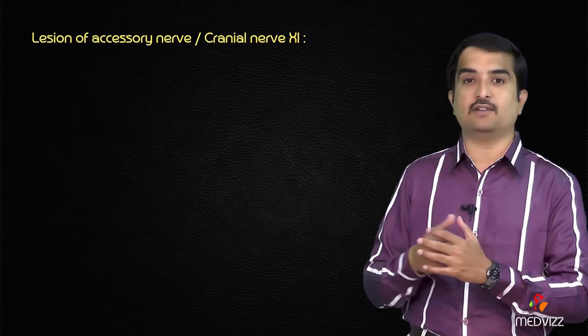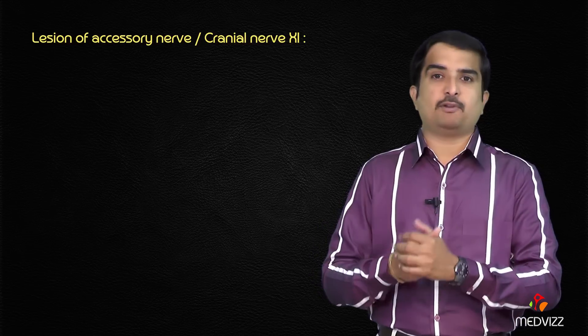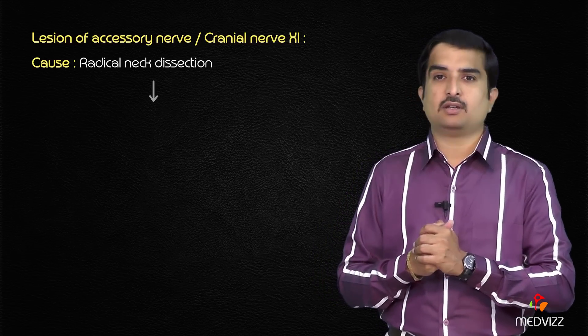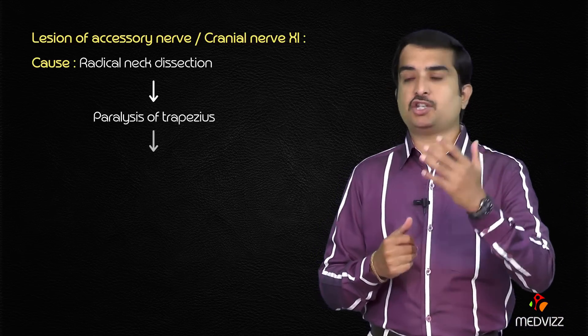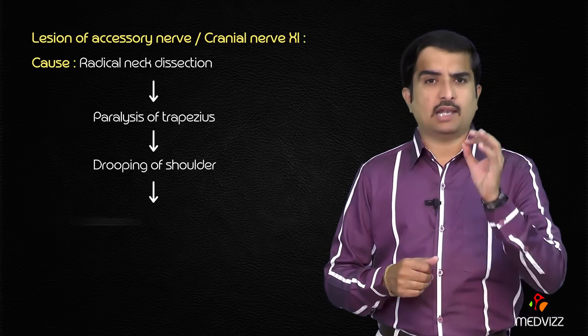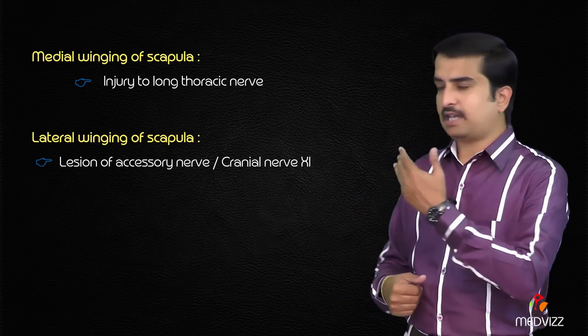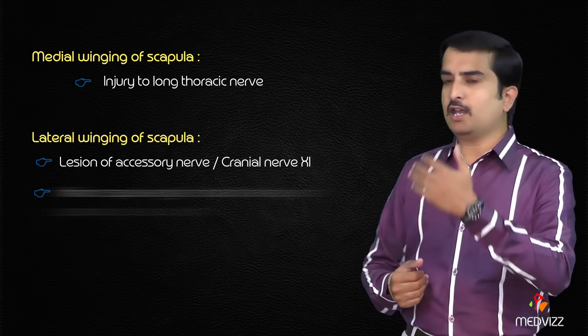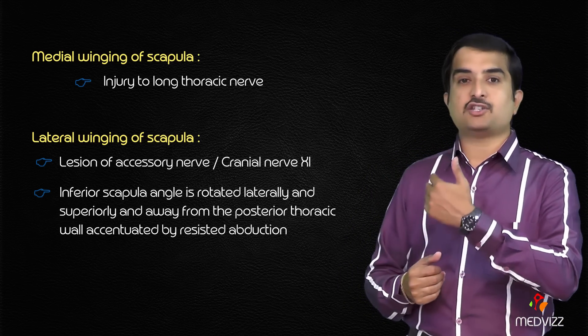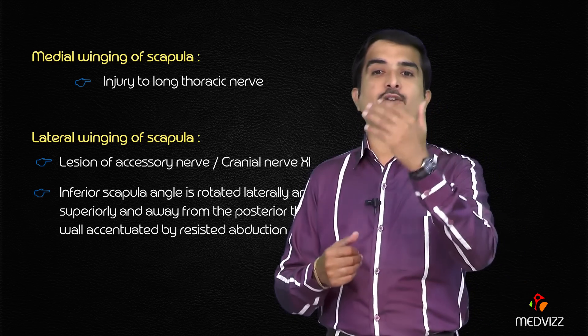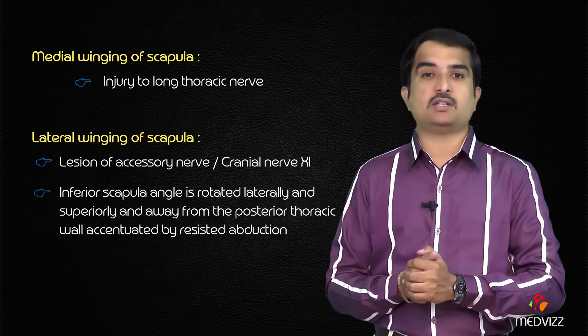Comparing this with a lesion of the accessory nerve (cranial nerve XI) — the best example being radical neck dissection — this leads to paralysis of the trapezius, resulting in drooping of the shoulder and lateral scapular winging. In lateral winging, the characteristic feature is that the inferior scapular angle is rotated laterally and shifted superiorly and away from the posterior thoracic wall, accentuated during resisted abduction.